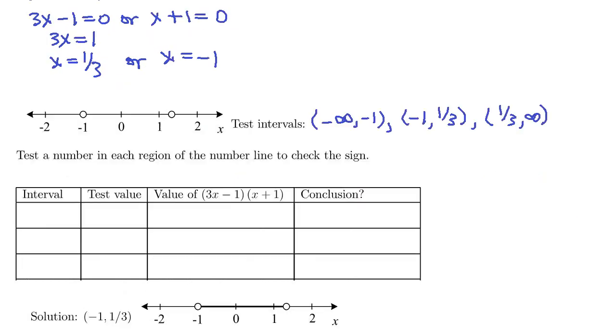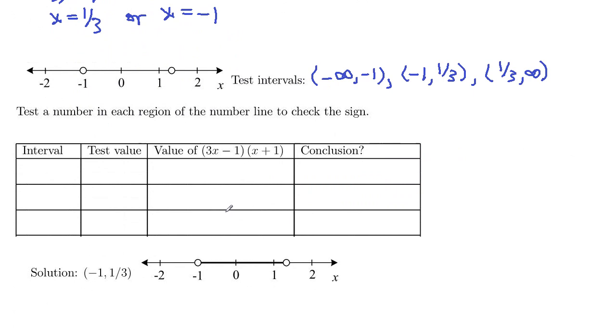So now we want to test and see which of those intervals are part of the solution. We're going to test a number in each region, each one of these three regions. So let's go ahead and put our intervals in here. So negative infinity to negative 1, negative 1 to 1 third, and 1 third to infinity. And so a value in this region, let's do negative 2. A value in this interval, why don't we pick 0. And then a value in the right interval, why don't we pick 2.